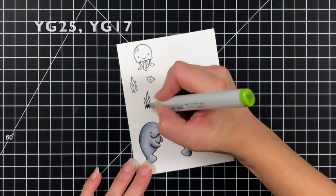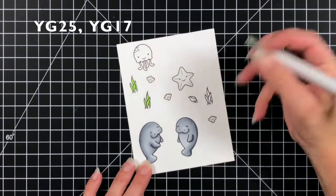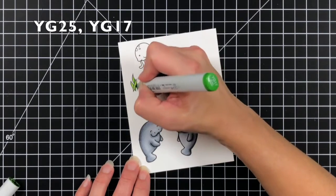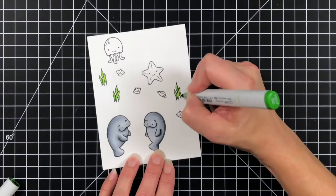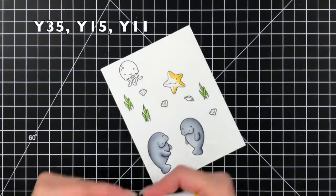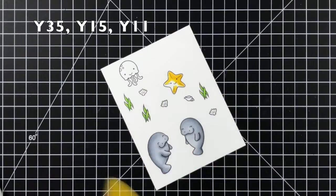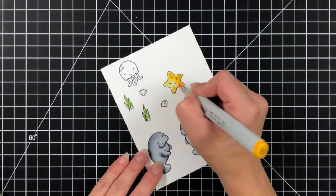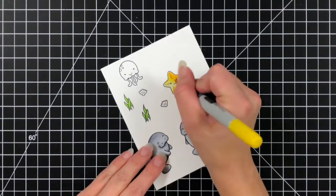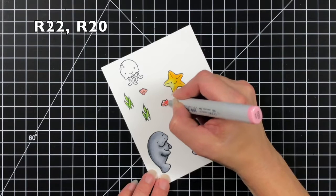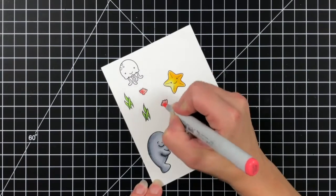Once I have the manatees colored up I'm going to go into the seaweed so I use the YG25 and the YG17. I did the YG25 first which is the lightest color and just adding a little bit of a line of the YG17 just to have that contrast. For the starfish I'm using Y35 as the darkest color, Y15 and Y11. I did keep the darkest color off on the right hand side.